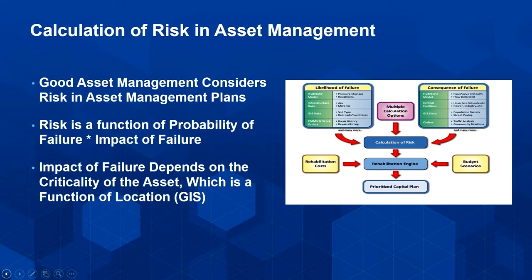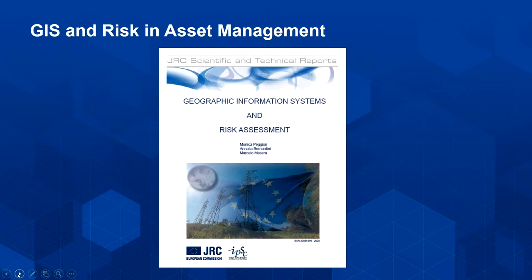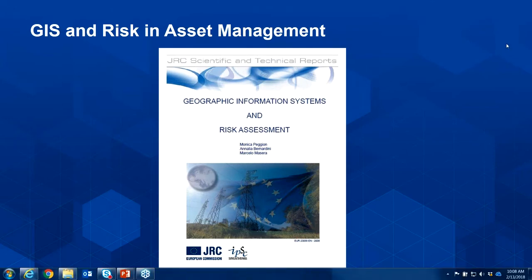For example, if a bridge which provides a main access point to a city were to fail — as we saw with the Interstate 35 bridge in Minneapolis — the consequences are quite significant. The consequence of failure is a function of the criticality of the asset, which is often a function of its location. The European Commission has commissioned several studies highlighting the role of GIS in risk assessment. Now let me turn this over to Eric Nutt, who will talk about how to collect good asset information and build that asset registry.